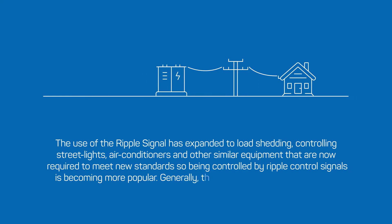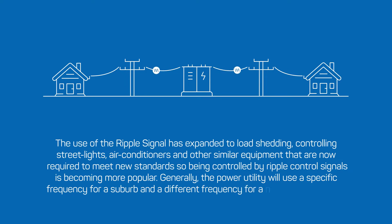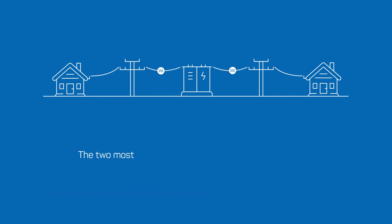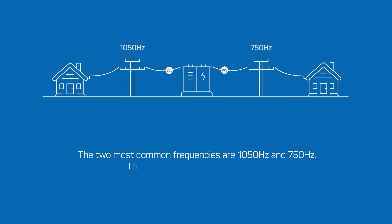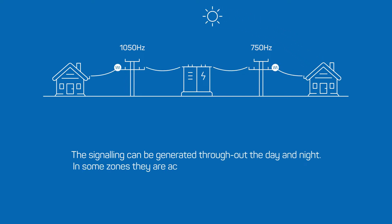Generally the power utility will use a specific frequency for a suburb and a different frequency for a neighboring suburb. The two most common frequencies are 1050 Hertz and 750 Hertz, though there are several others in use too. The signaling can be generated throughout the day and night — in some zones they are active from early morning to late night.